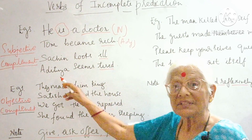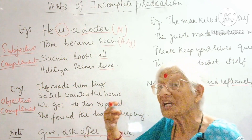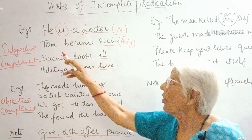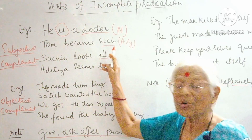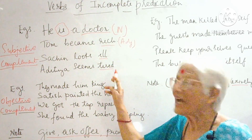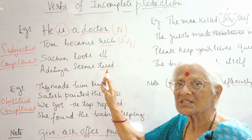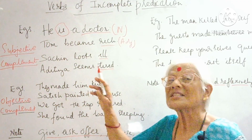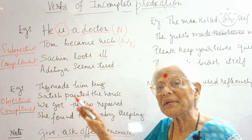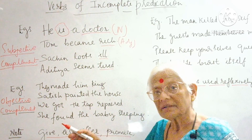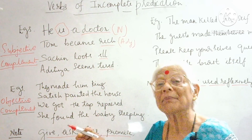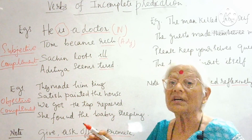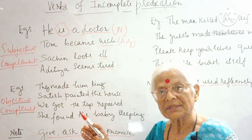The word 'tired' belongs to the subject Aditya — which Aditya? The one who is tired. Which Sachin? The one who is ill. Which Tom? The Tom who is rich. So these words — rich, ill, tired, doctor — all tell you about the subject. Therefore they are called subjective complements: complements that complete the sense of the verb and belong to the subject. Understood?